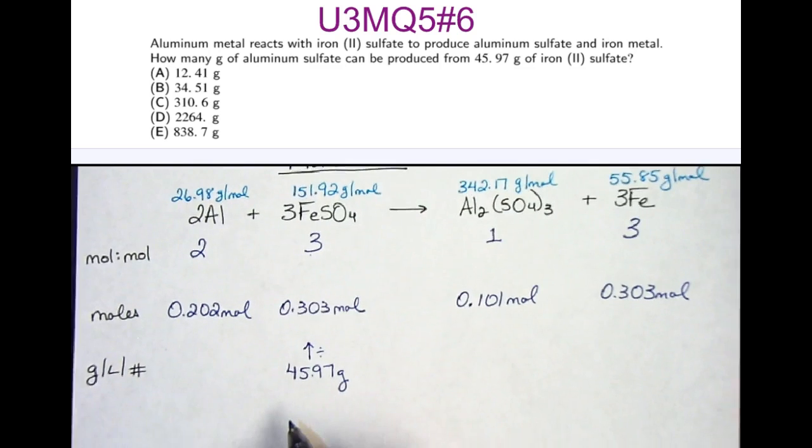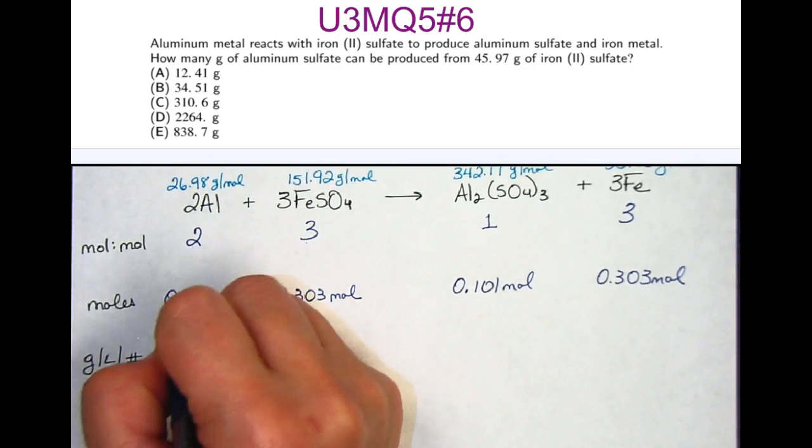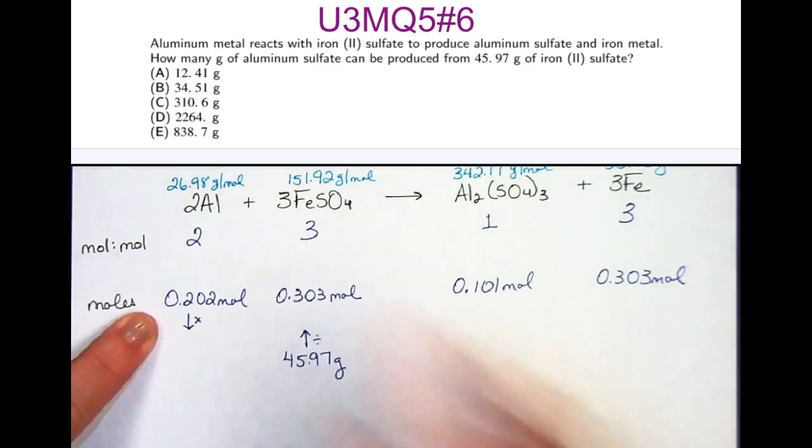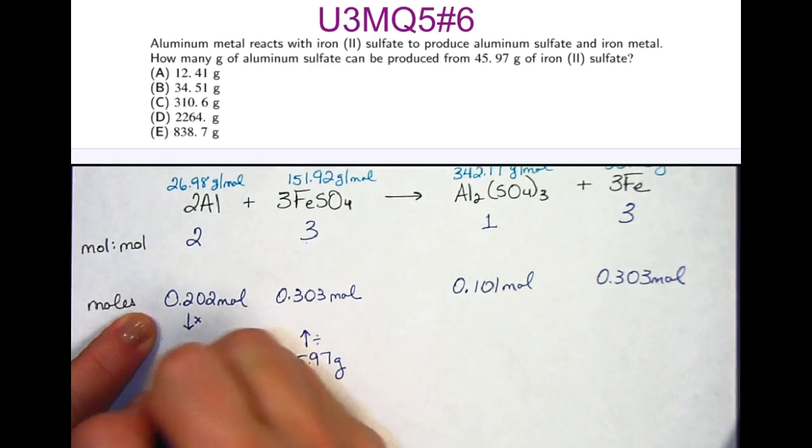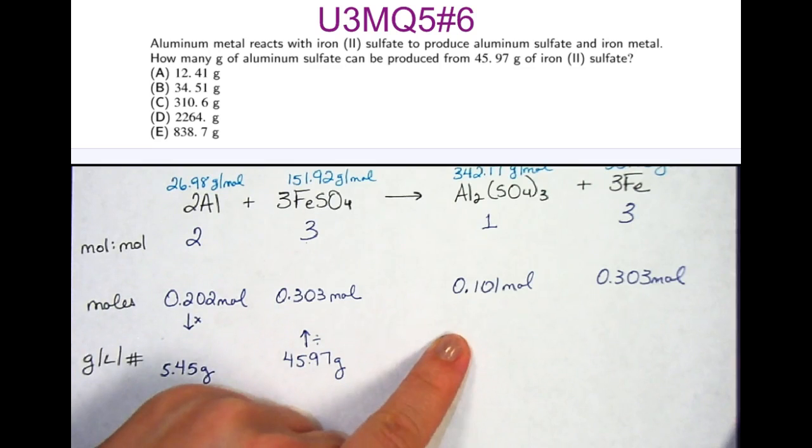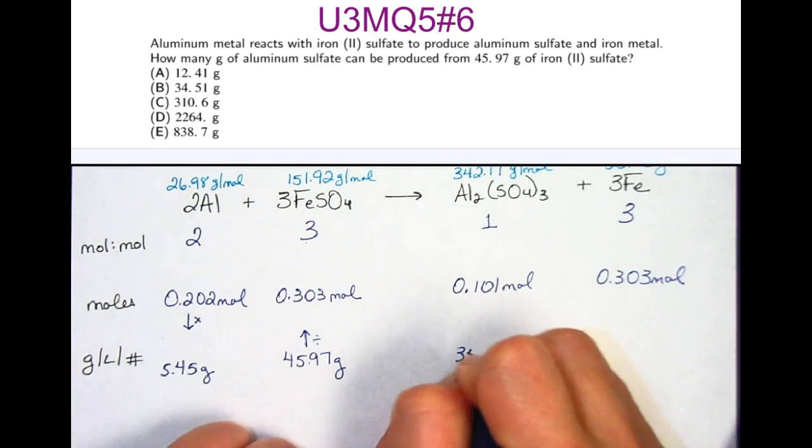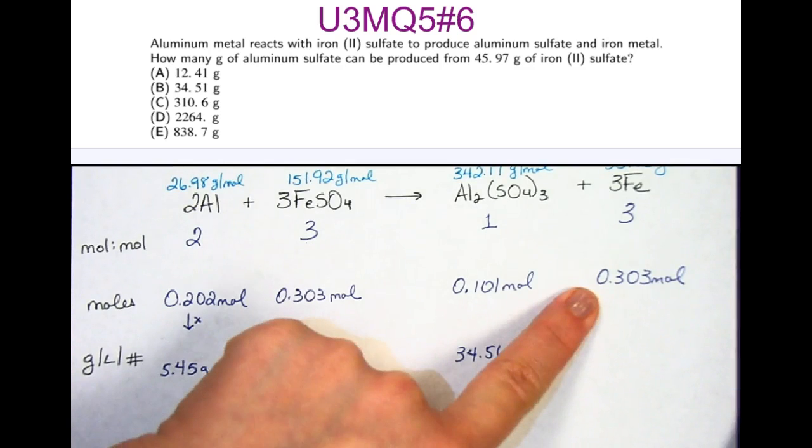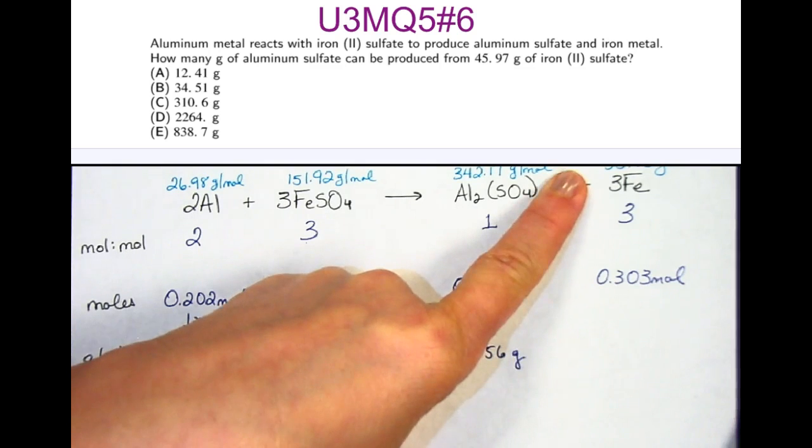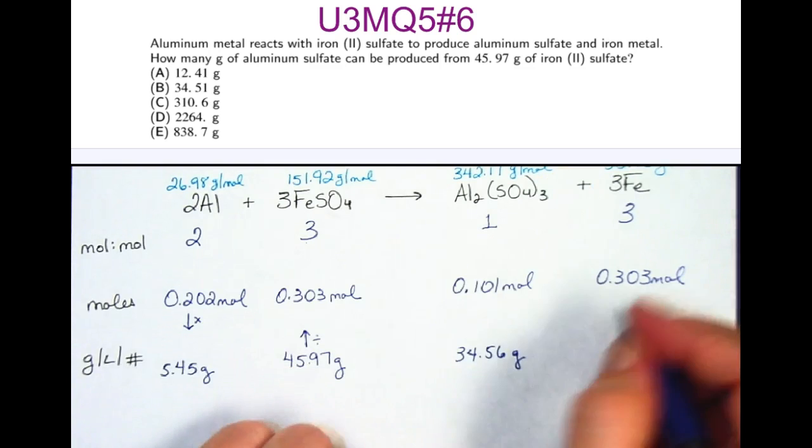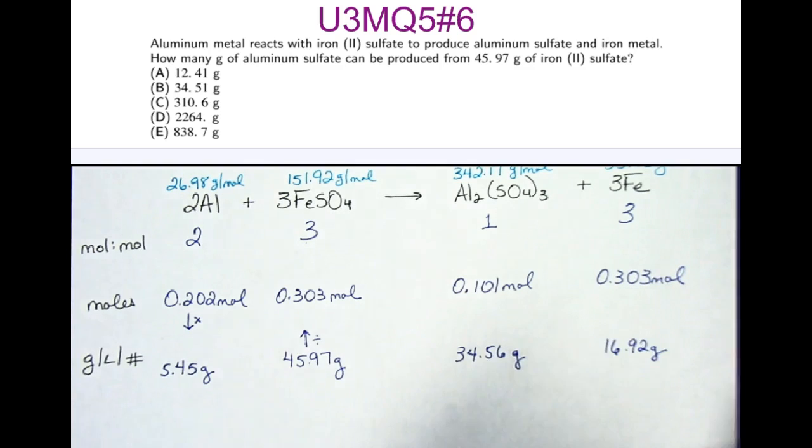Now that I know the moles of everything, I can change them to grams by multiplying the moles times the molar mass above. So 0.202 times 26.98 gives me 5.45 grams of aluminum. 0.101 times 342.17 gives me 34.56 grams of aluminum sulfate. And 0.303 times 55.85 gives me 16.92 grams of iron.